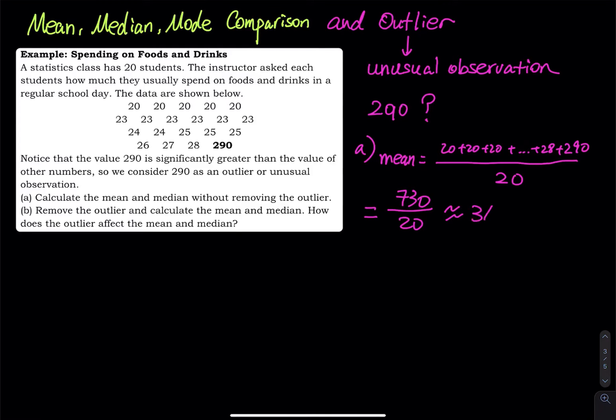So this one equals 730 divided by 20. So on average they spend $36.50 on food and drink. Does this sound true to you? The answer is no, that doesn't look right. This number doesn't look right to me because most people spend around 20 to 28.